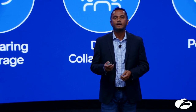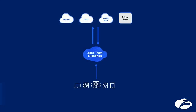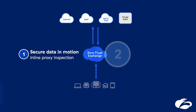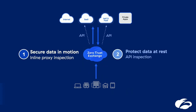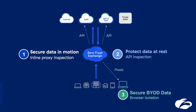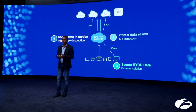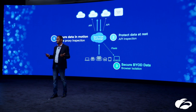We wanted to solve the cloud DLP problem. So we started leveraging our existing Zero Trust Exchange — essentially our customers' gateway to the internet. All their internet-bound traffic is egressing through our man-in-the-middle proxy. For data security, we delivered data security for data in motion, data at rest, and also sensitive data on BYOD and unmanaged assets across hundreds of cloud-based applications.